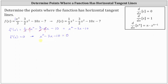We solve this by factoring into two binomial factors. The factors of x squared are x and x. The factors of negative 10 that add to negative 3 are negative 5 and positive 2, giving (x minus 5)(x plus 2) equals 0. The product equals zero when x minus 5 equals 0 or x plus 2 equals 0, so x equals 5 or x equals negative 2.